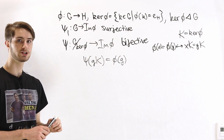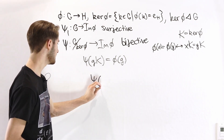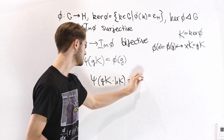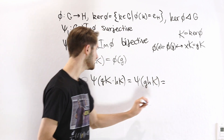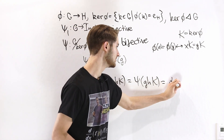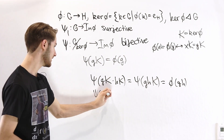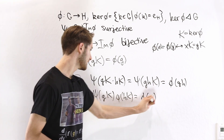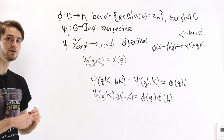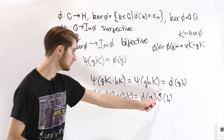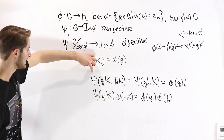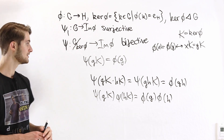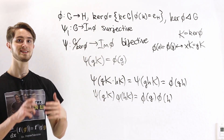We just need to confirm that psi is still a homomorphism. Consider psi of gK times hK. Since the kernel is a normal subgroup, we can combine the cosets to get psi of ghK, which by definition equals phi of gh. On the other hand, psi of gK times psi of hK equals phi of G times phi of H. Since phi is a homomorphism, phi of gh equals phi of G times phi of H. Therefore psi of gK times hK equals psi of gK times psi of hK — psi is a homomorphism. Since psi is a bijective homomorphism, it is an isomorphism.